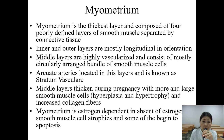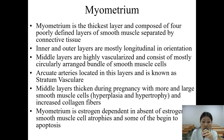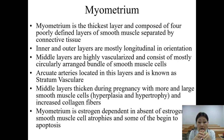The myometrium is the thickest layer, composed of four poorly defined layers of smooth muscle separated by connective tissue. The inner and outer layers are mostly longitudinal in orientation, and the middle layers are highly vascularized and consist of mostly circularly arranged bundles of smooth muscle cells. The arcuate arteries are located in these layers, known as stratum vasculare. The middle layers thicken during pregnancy with more and larger smooth muscle cells — hyperplasia and hypertrophy — and increased collagen fibers.